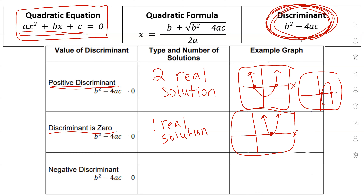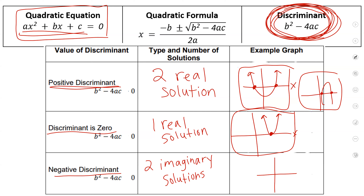Finally, if you have a negative discriminant — so if you plug it into the formula and you get a negative answer — that means you'll have two imaginary solutions. Which means when you graph it, it won't touch the x-axis at all. It might look something like this. You don't have any real solutions; you don't have any real x-intercepts. That's what the discriminant will tell you about your graph.